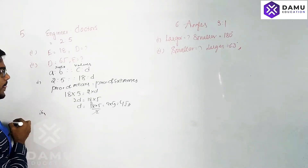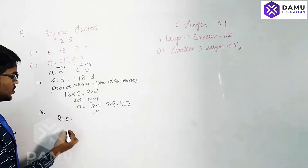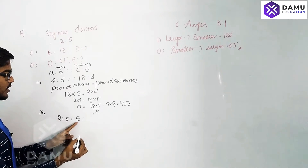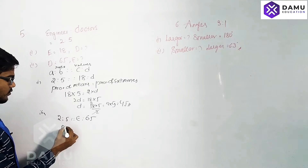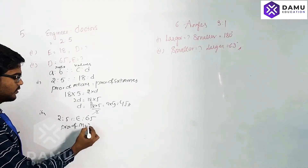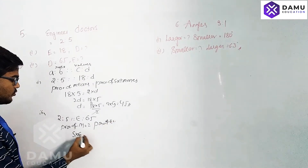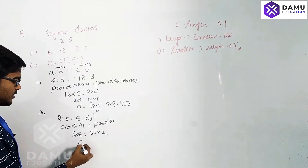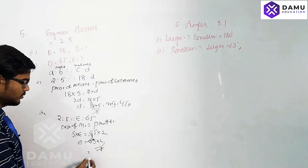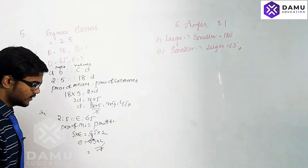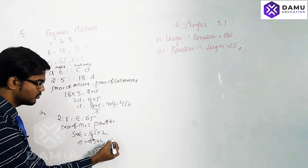For the second part, we take 2 is to 5 as the number of engineers (to be calculated) is to the number of doctors, which is 65. Product of means equals product of extremes: 5 into E equals 65 into 2. So E equals 65 into 2 divided by 5, which gives 13 into 2.